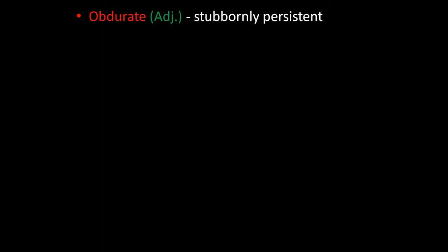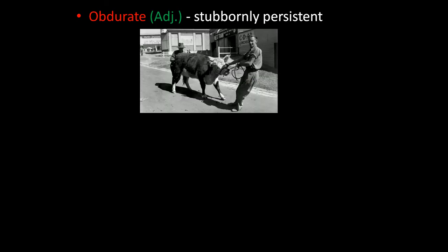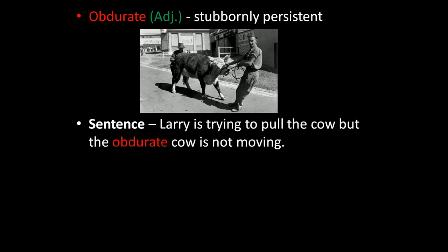The next word is obdurate. Obdurate is an adjective. It means stubbornly persistent. In this photo, a man is dragging a cow. The cow is stubborn and doesn't want to move — that is, the cow is obdurate. The sentence is: Larry is trying to pull the cow, but the obdurate cow is not moving — he is very stubborn.